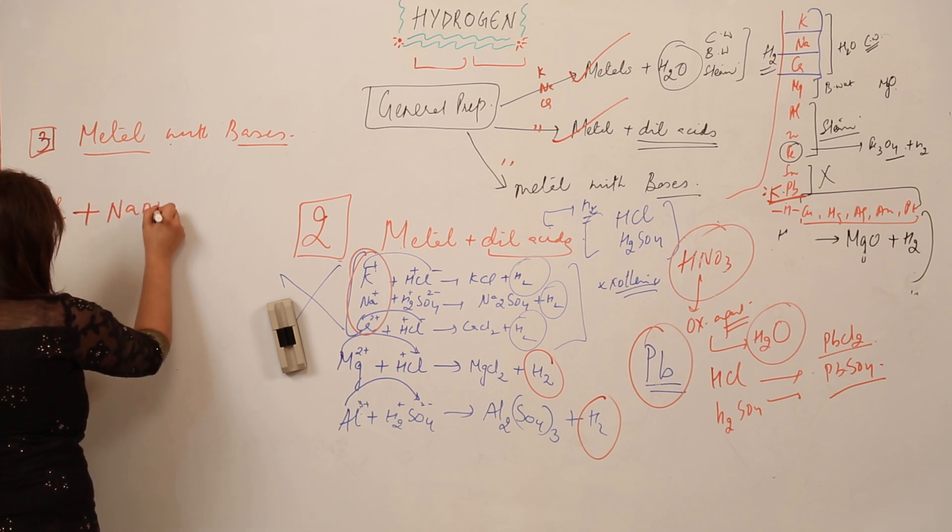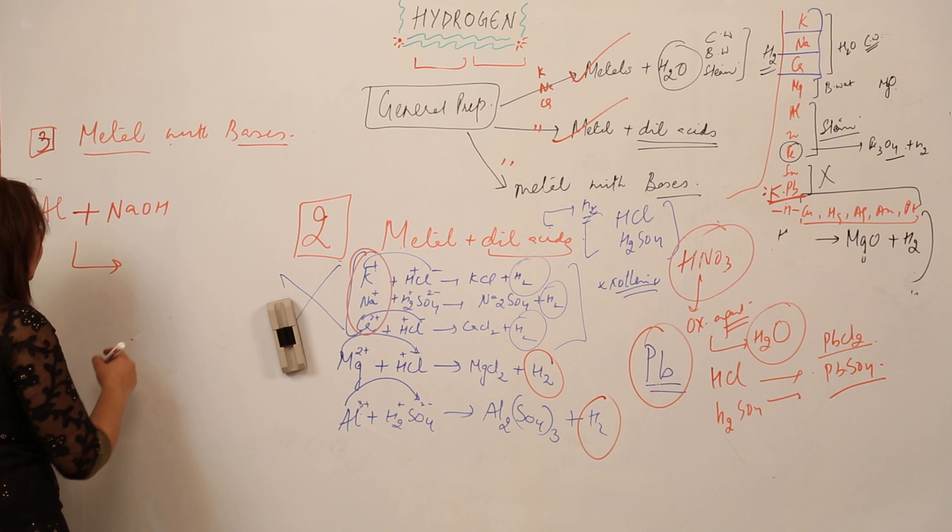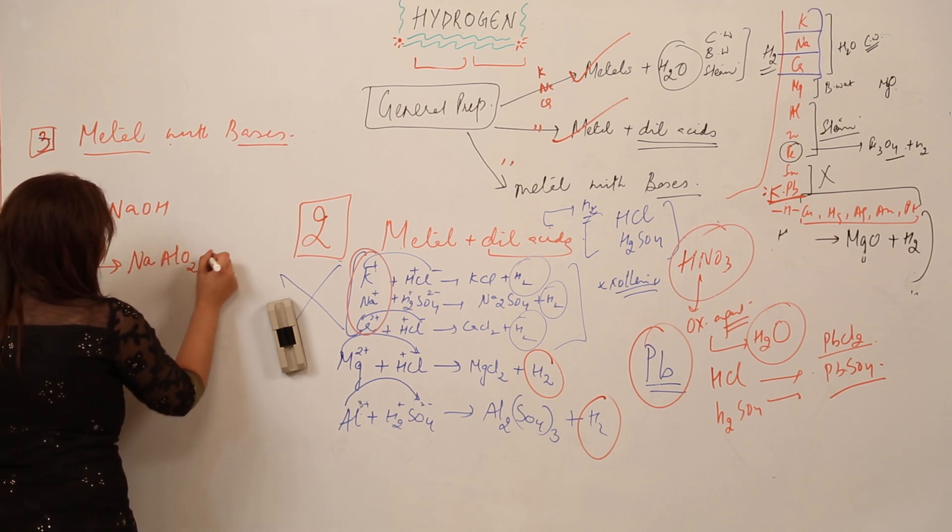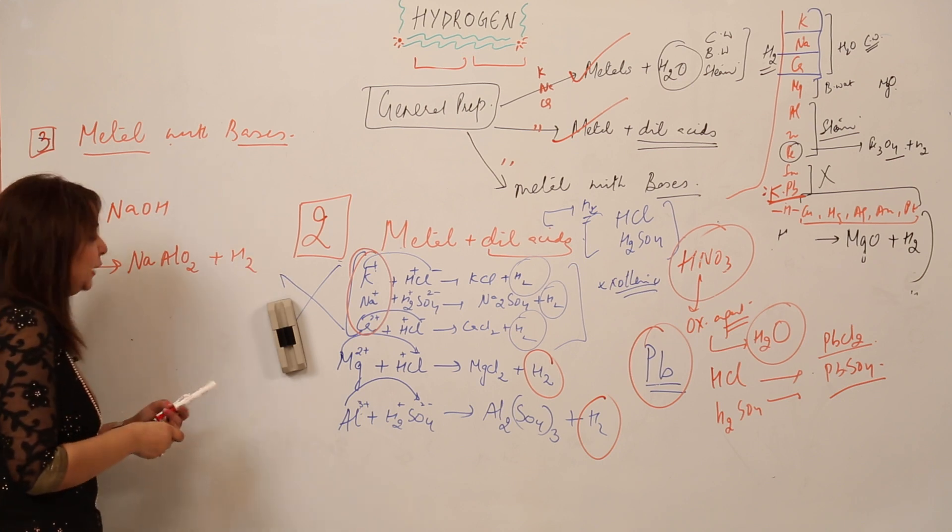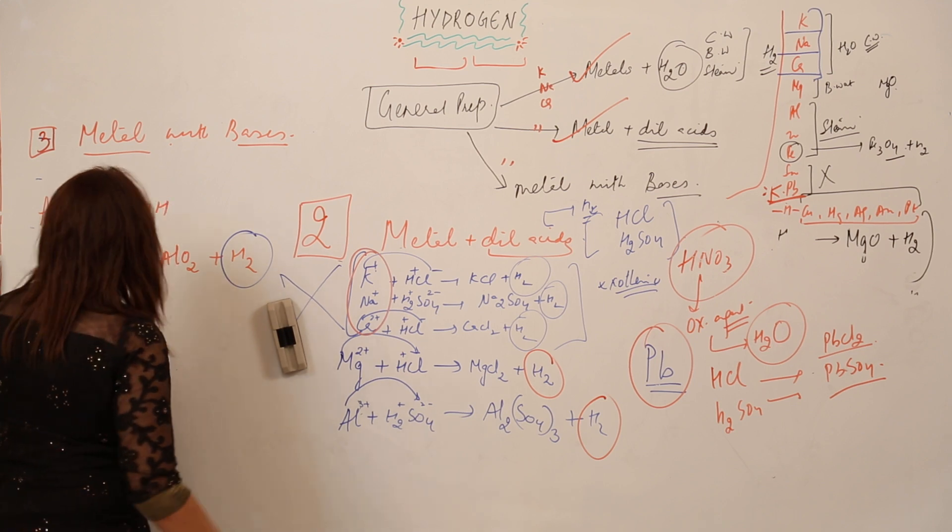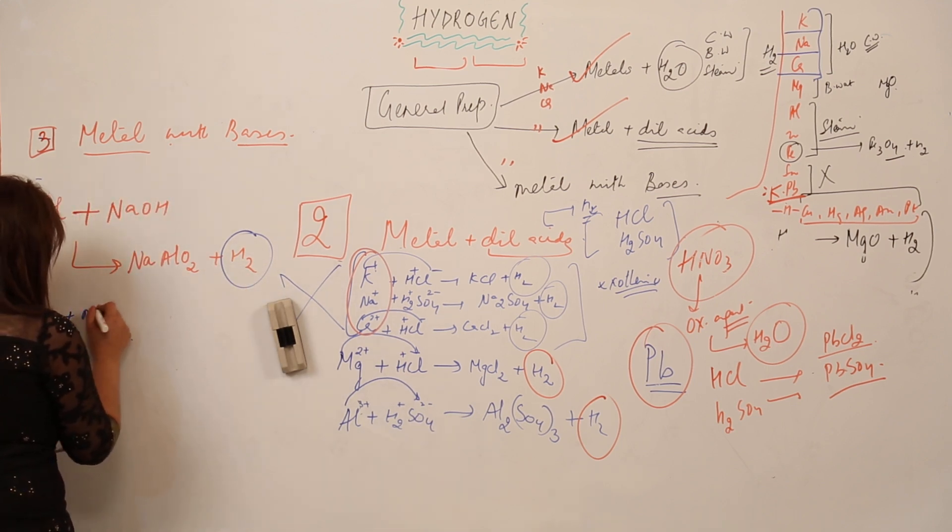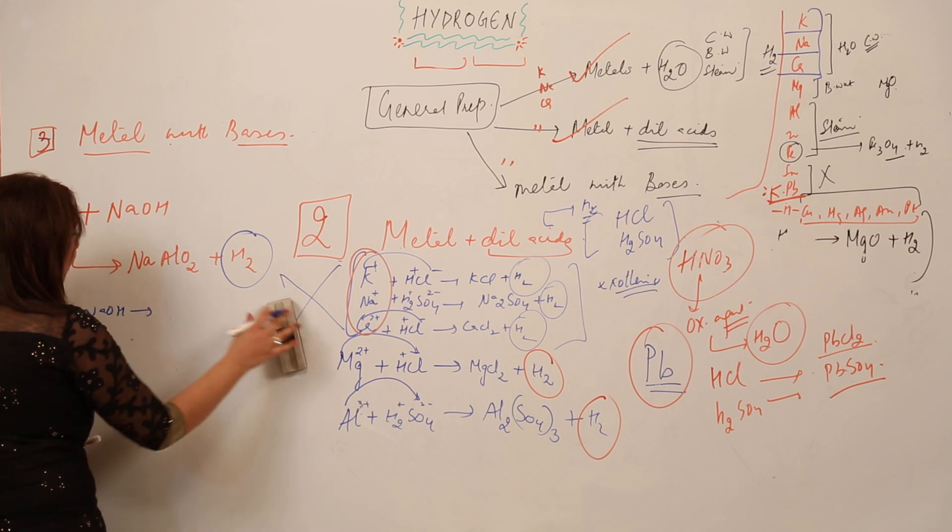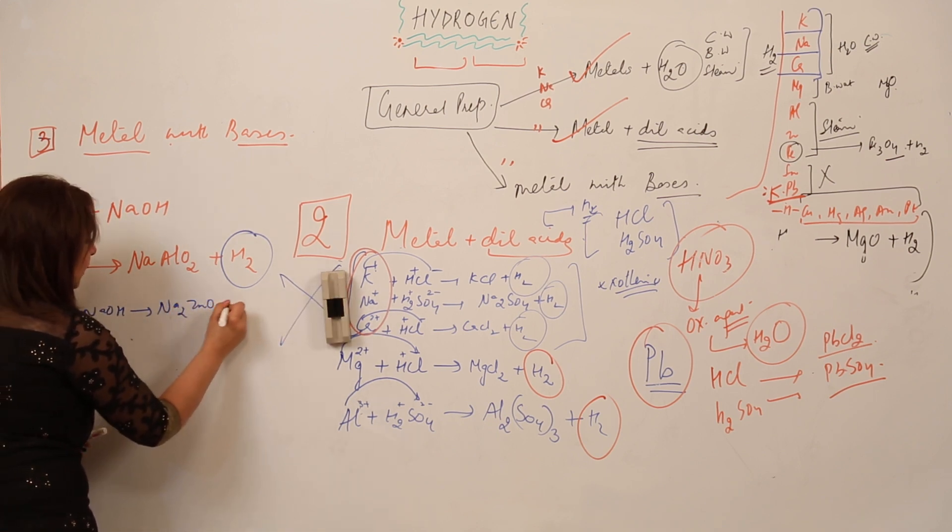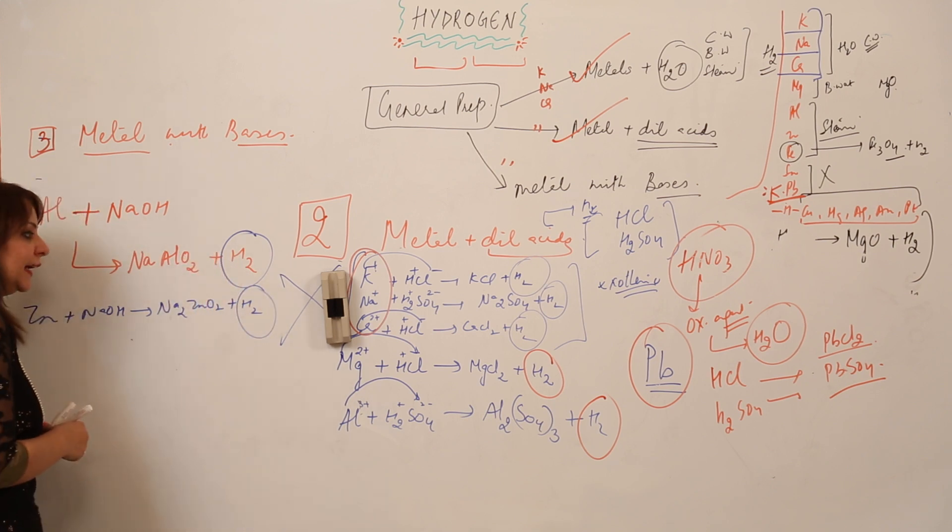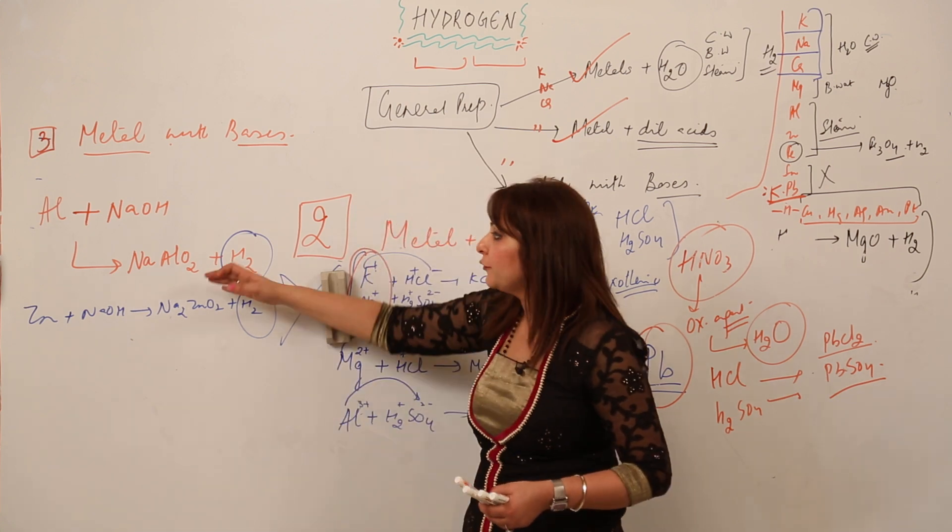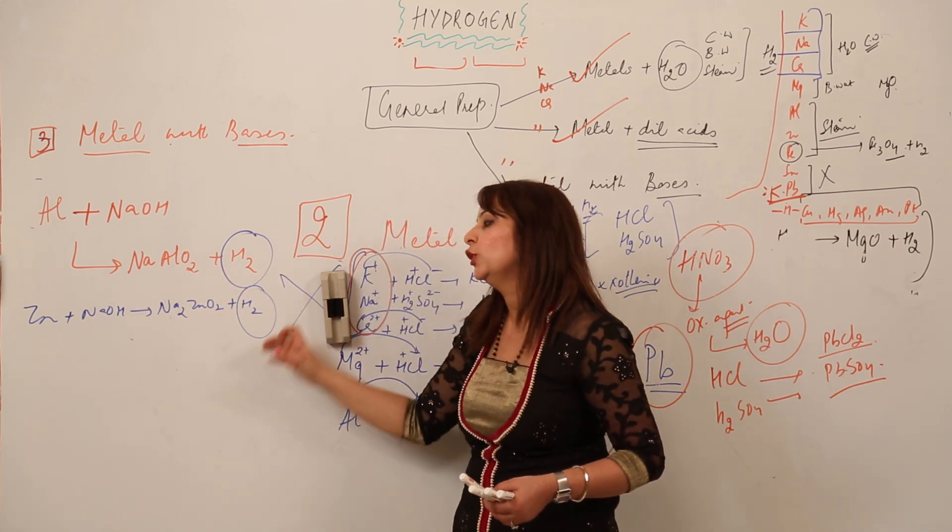I am reacting it with the base. When metal reacts with the base, it forms sodium aluminate and along with it, obviously, we get our desired product for which we are doing all these reactions, that is H2. Moreover, similarly, when zinc reacts with NaOH, it forms sodium zincate and again our desired product H2. Likewise, we can react the metal with bases and we'll be getting different salts like sodium aluminate, sodium zincate, and along with that we get the desired product.